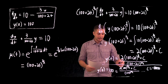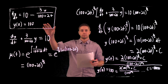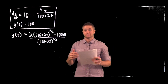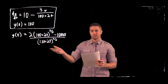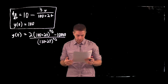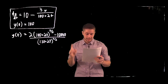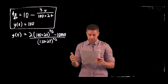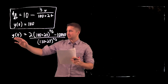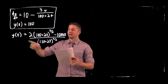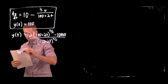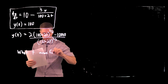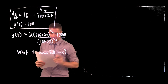Now we have our solution to the initial value problem, which tells us the amount of salt in the tank at time t. But the question asked for the concentration of salt when the tank is full — that is, when it has 200 gallons. So we need to find at what time t the tank is full.